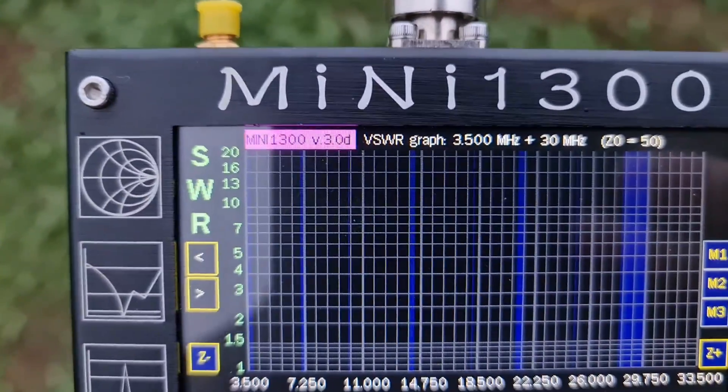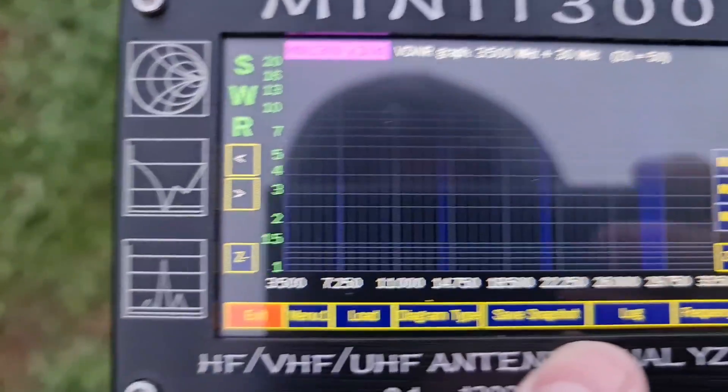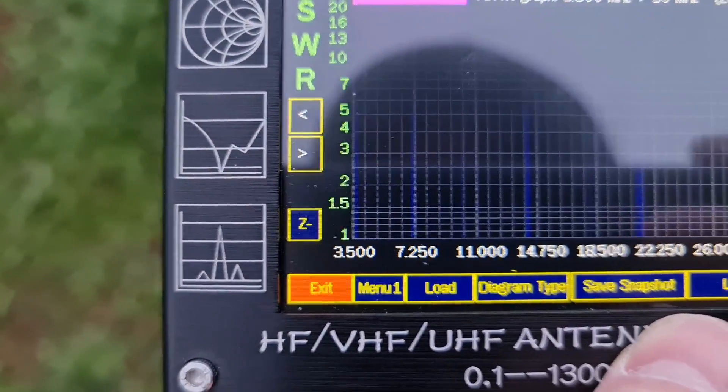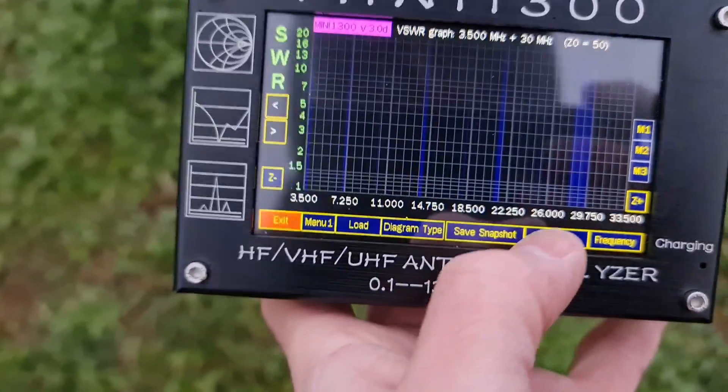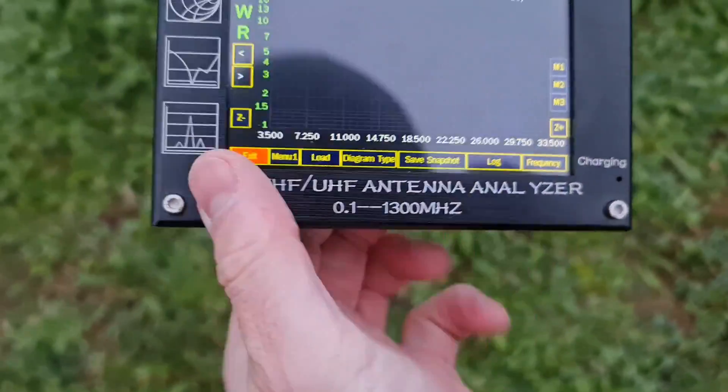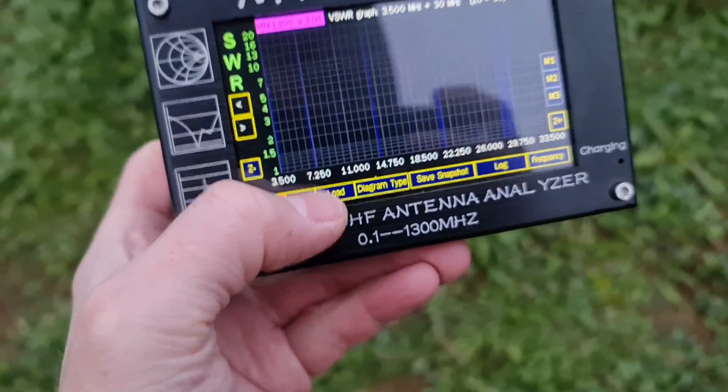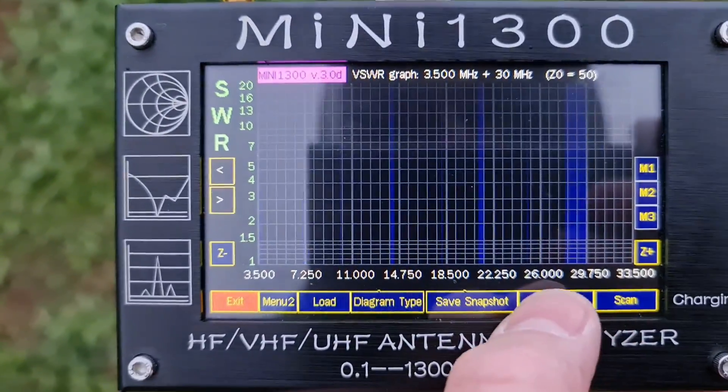These are the ham radio bands, so it is beginning on 3.5 and ends on 29 or 30 max. Let's see how this antenna resonates on the other bands.